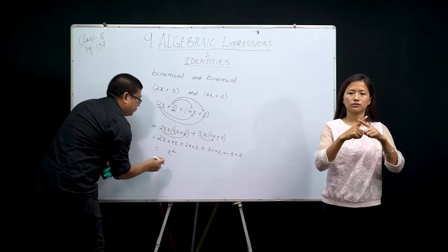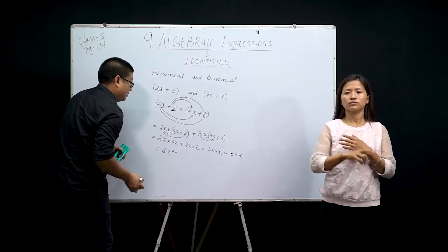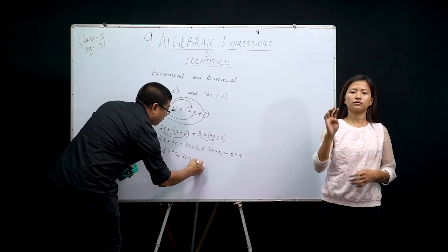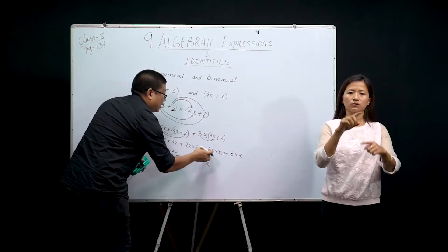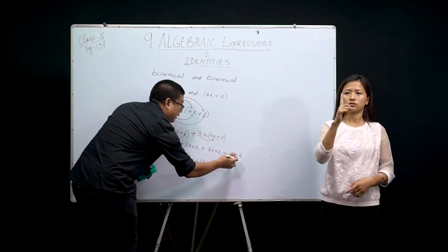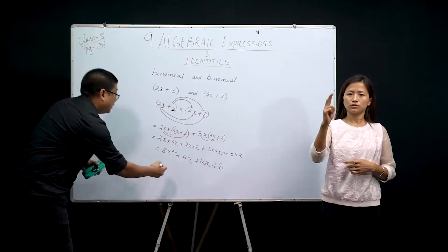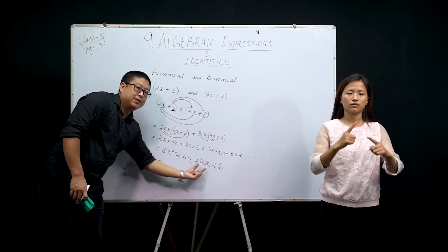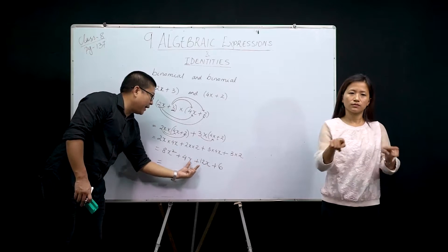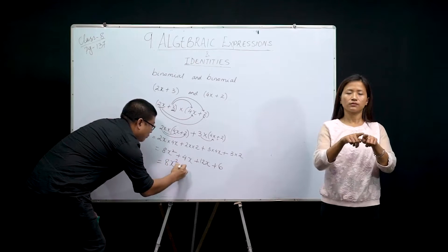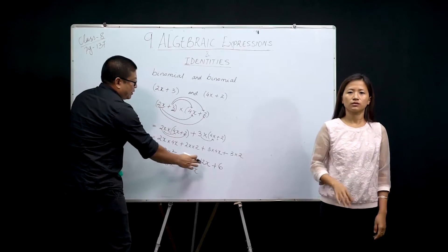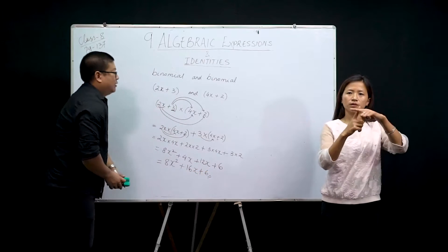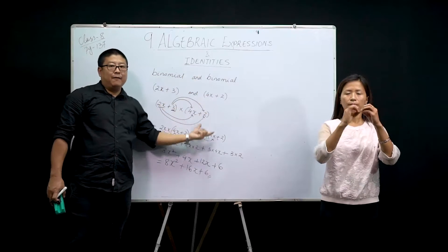Now finishing the multiplication: 2x into 4x gives 8x². 2x into 2 gives 4x. 3 into 4x gives 12x. 3 into 2 gives 6. So we have 8x² + 4x + 12x + 6. Now we add the like terms: 4x and 12x are like terms, giving 16x. Final answer: 8x² + 16x + 6. This is how you multiply a binomial and a binomial.